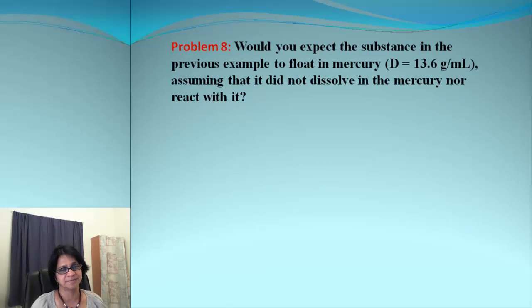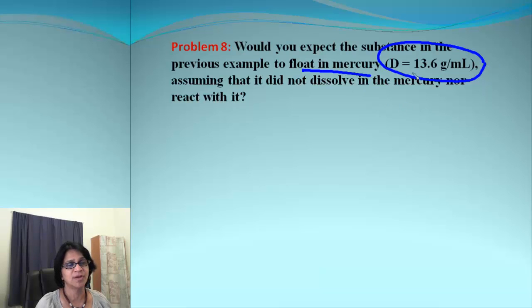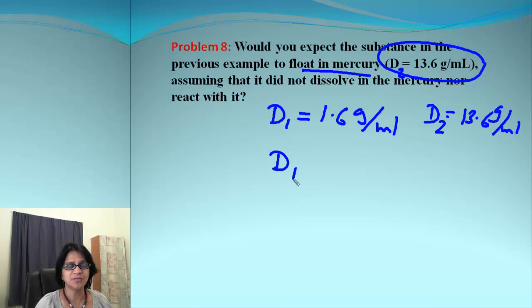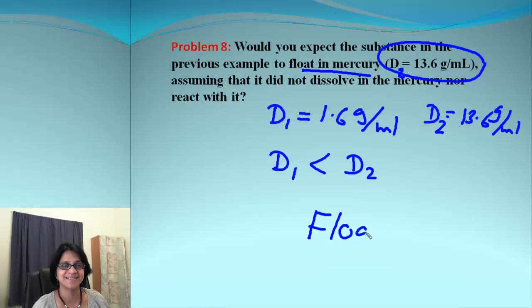There is a last problem here. The same substance, will it float or sink in mercury? Mercury has a density of 13.6 grams per milliliter. Our object's density D1 is 1.6 grams per milliliter, and mercury's density D2 is 13.6 grams per milliliter. Our object has density which is smaller than density of mercury. Density smaller means it will float in mercury.